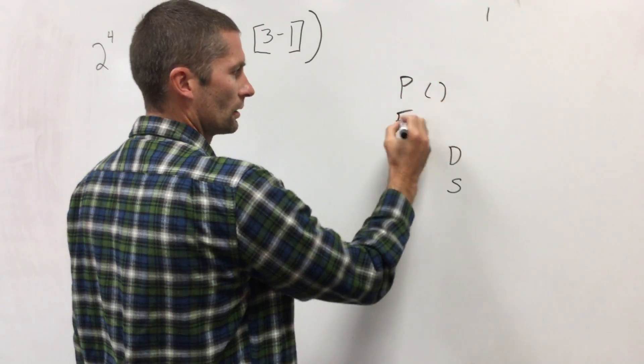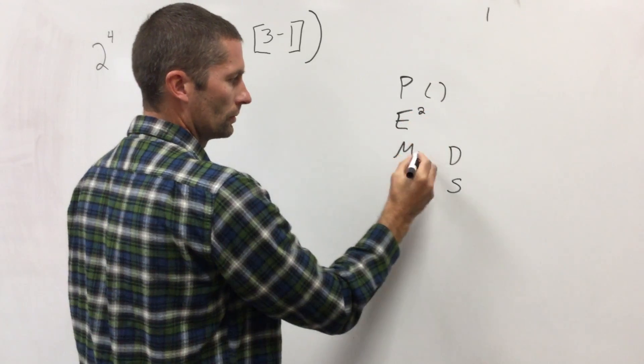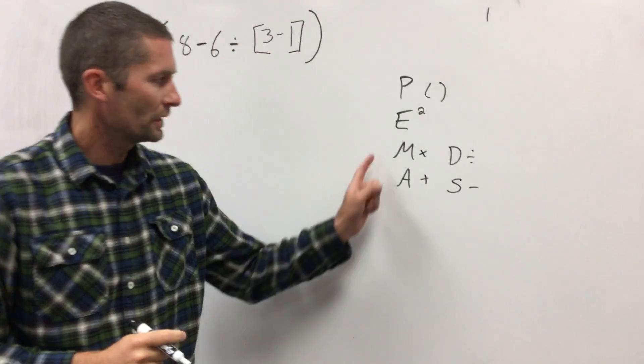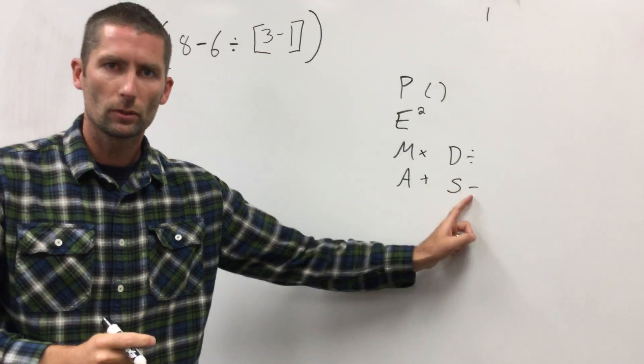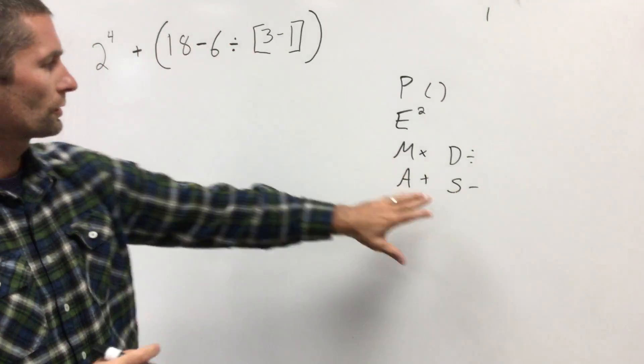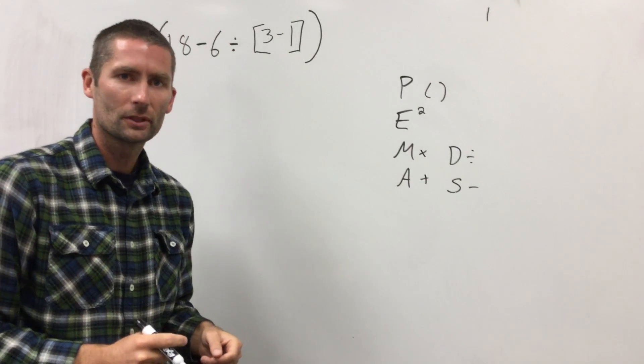P stands for parentheses, E for exponent, M for multiply, D for divide, A for add, S for subtract. We have to go left to right with these, left to right with these—not add before subtract. If subtract comes first, left to right, that's what we do first.